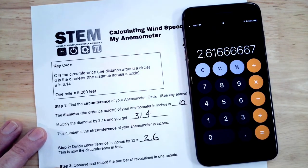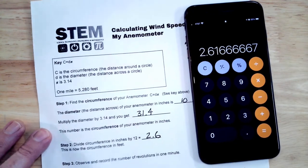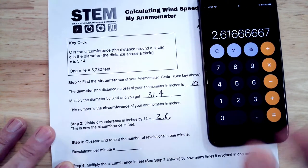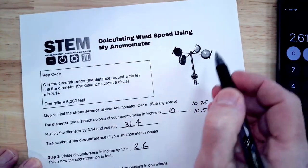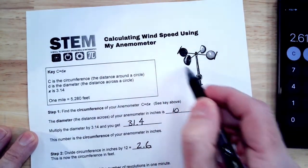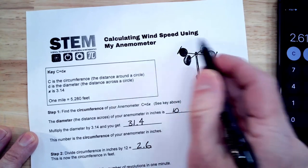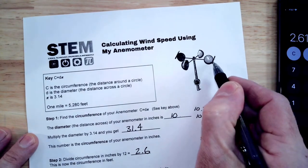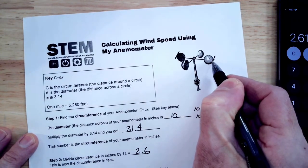And then step 3 here is observe and record the number of revolutions in one minute. So basically you're going to hold your anemometer up to the fan and count how many times does it spin a full revolution all the way around in one minute or 60 seconds. So if it starts here and it comes all the way around, that's one revolution.